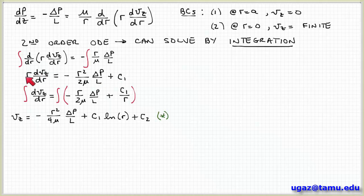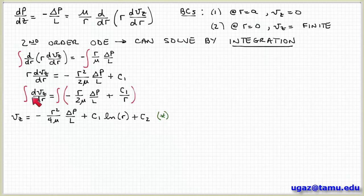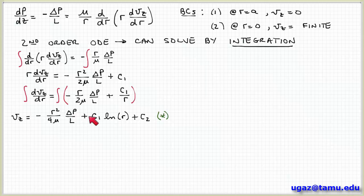Now I divide both terms by r to bring the r on the left-hand side over, giving minus r over 2mu times delta p over L plus c1 over r. Integrating both sides again: on the left-hand side I get vz, and on the right-hand side the integral of r gives r squared over 2, so I have r squared over 4mu times delta p over L. The integral of 1 over r is the natural log of r, giving c1 times natural log of r plus another constant of integration, c2. I'll call this whole equation star to refer back to it later.